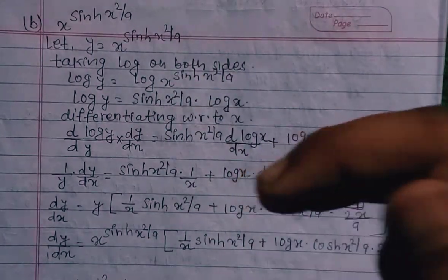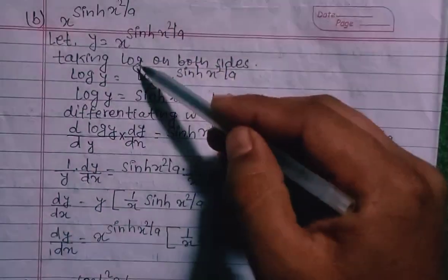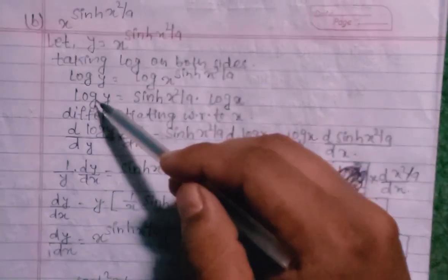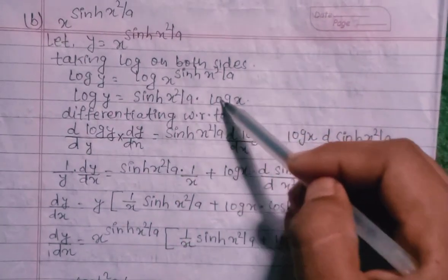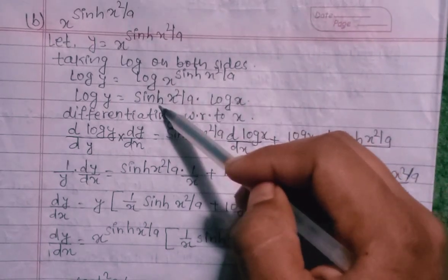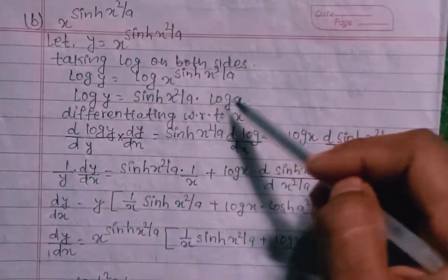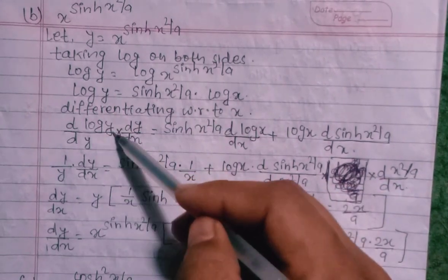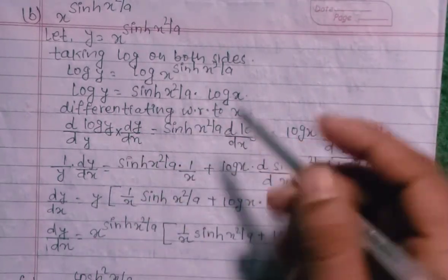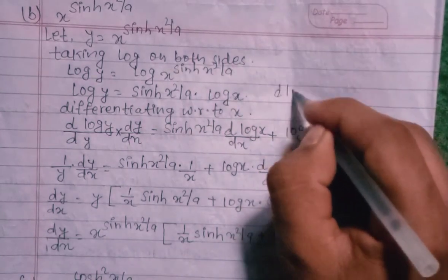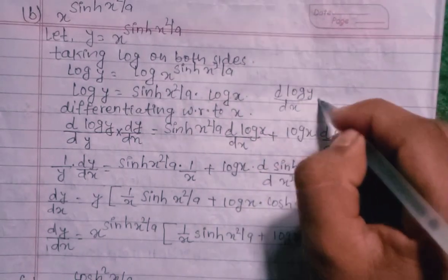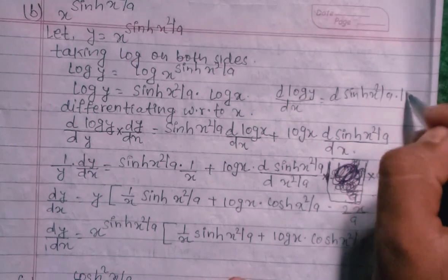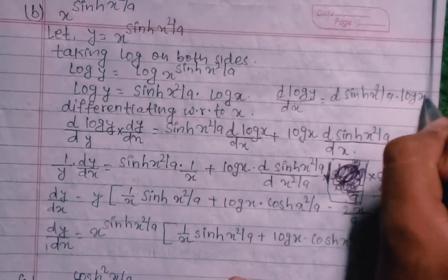Taking log on both sides: log Y equals sin(x) into log Y. Since the power is sin, that power comes down, so log Y equals sin x times log x. Now differentiating with respect to X, d(log Y)/dx equals d/dx of [sin(x²/a) into log x].